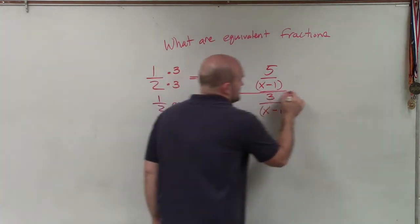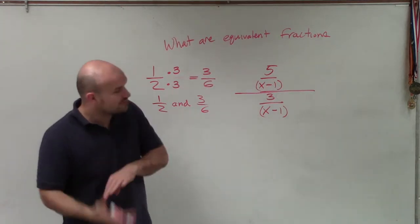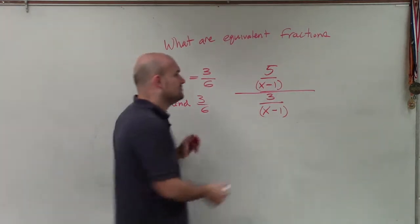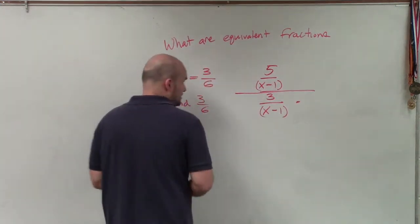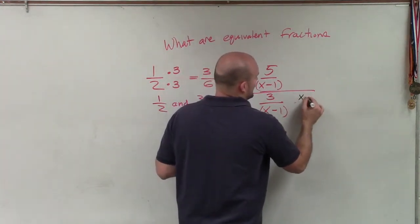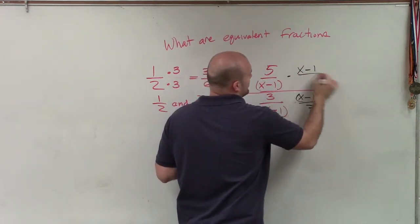So if I wanted to simplify this, what I'd have to do is, one thing that we talked about in this course is reciprocating. So you'd have to multiply by the reciprocal in your denominator. So I multiplied by reciprocal in my denominator, I'm going to use a different color. So I'd say x minus one divided by three times x minus one divided by three.